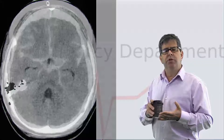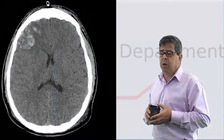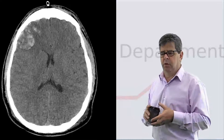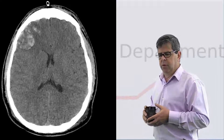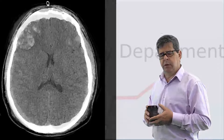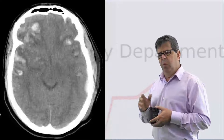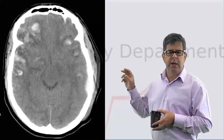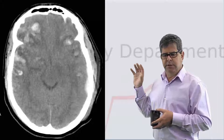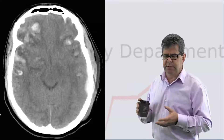What about contusions — bruising inside the cerebrum? They could occur anywhere: from a direct strike, a contre-coup injury, or deceleration. What you see are small white areas inside the cerebral tissue, which are relatively easy to see.